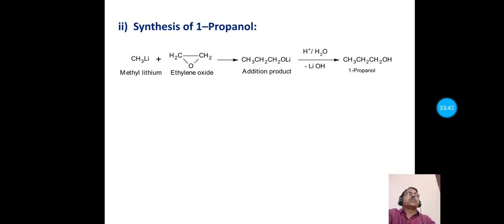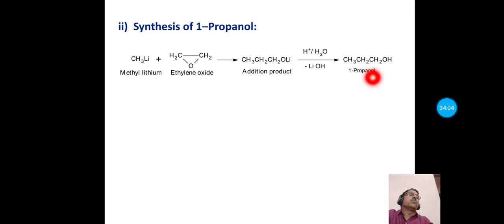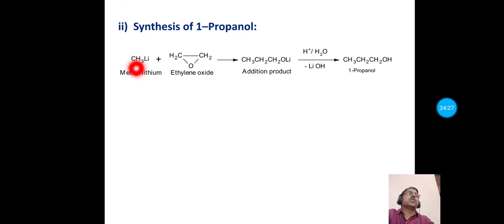The second application of methyl lithium is synthesis of 1-propanol. Methyl lithium is treated with ethylene oxide (a cyclic reagent), forming an addition product, which upon acid hydrolysis gives 1-propanol (a primary alcohol). The C–O bond in ethylene oxide is ruptured heterolytically, both electrons going to oxygen, making the CH₂ carbon electron-deficient. The CH₃ group attaches to this electron-deficient CH₂, lithium attaches to oxygen, and acid hydrolysis of the intermediate gives 1-propanol with loss of lithium hydroxide.